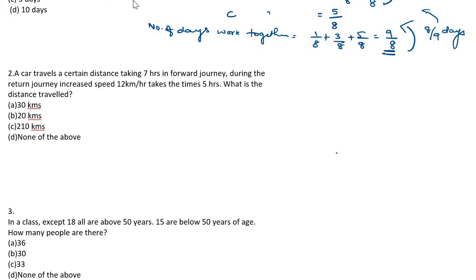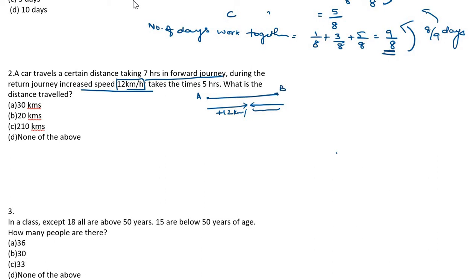A car travels a certain distance taking 7 hours for the forward journey. During the return journey, the speed increases by 12 km/h. We don't know the starting speed. After some time he increased by 12 km/h. So if moving from A to B and returning B to A, the speed may vary, but the distance is the same. We can use the fact that distance is the same to find the value.